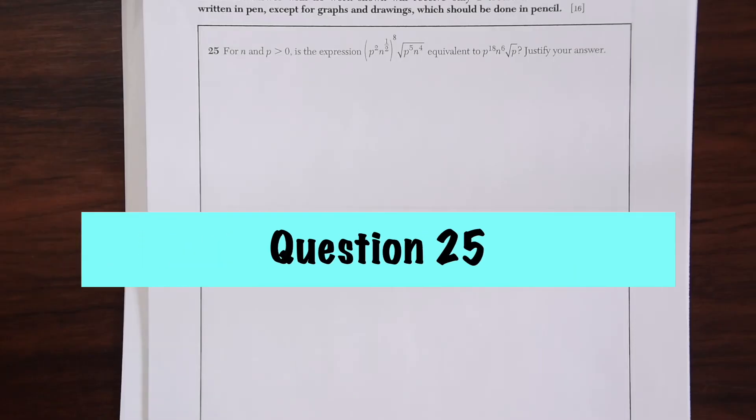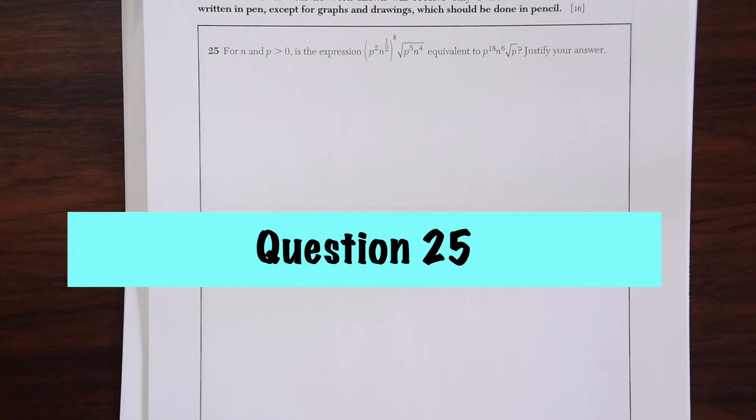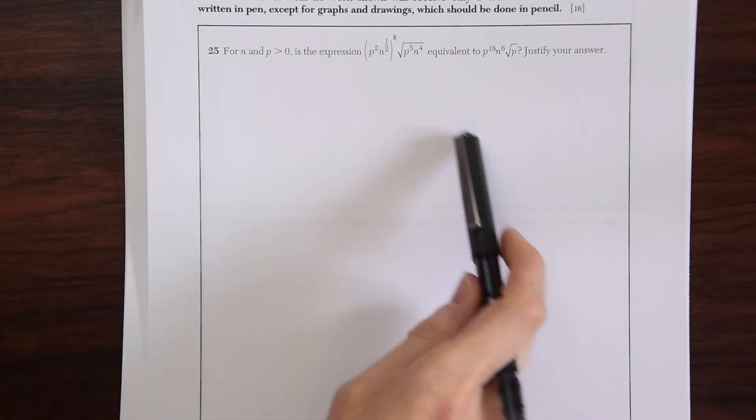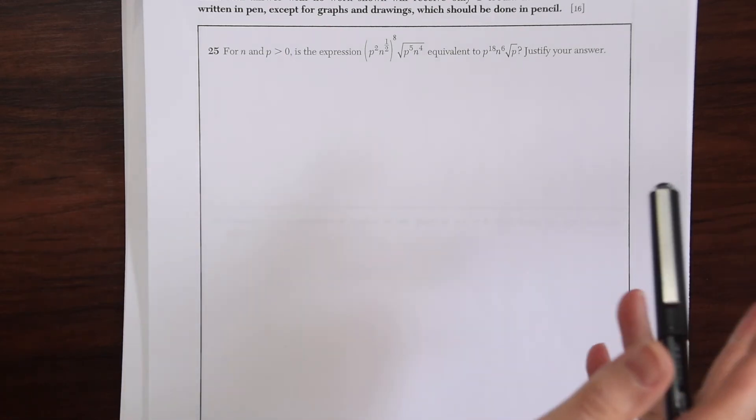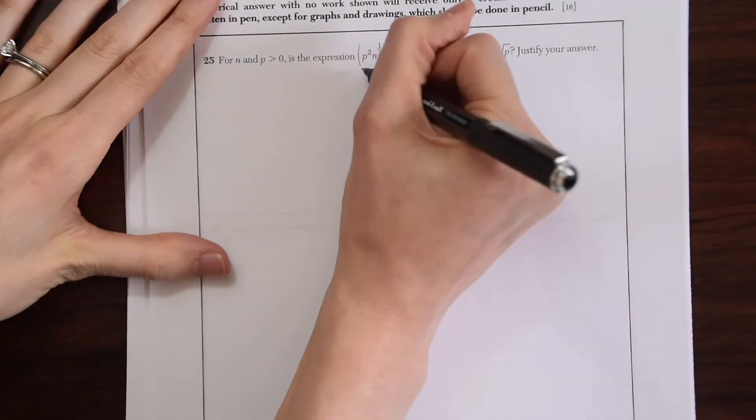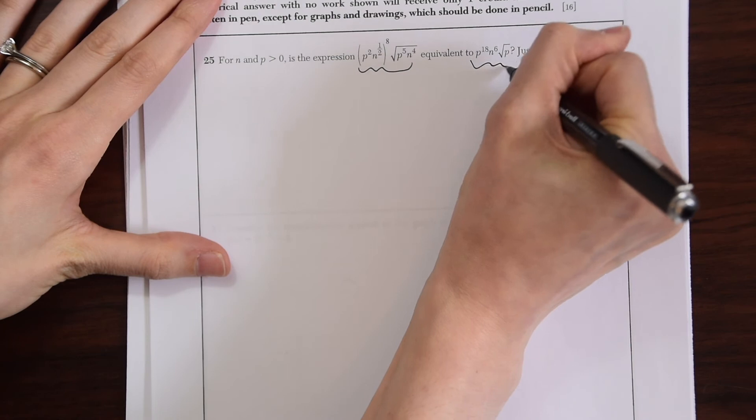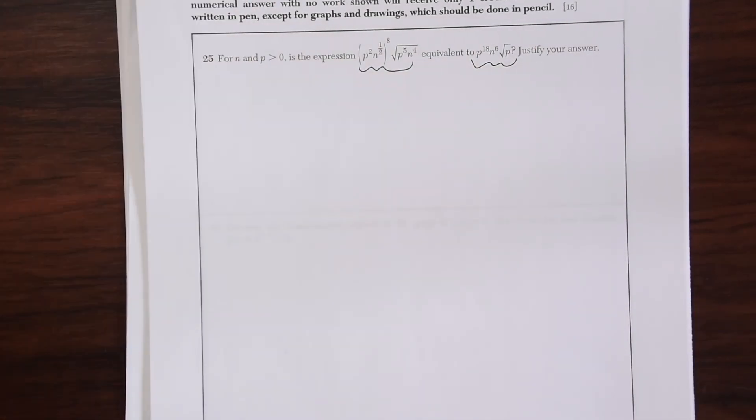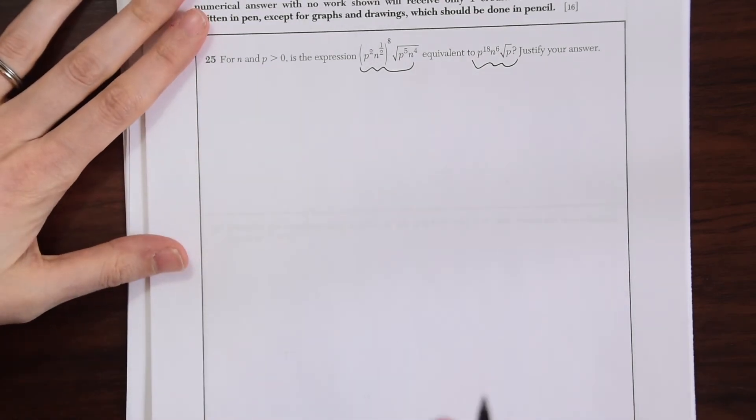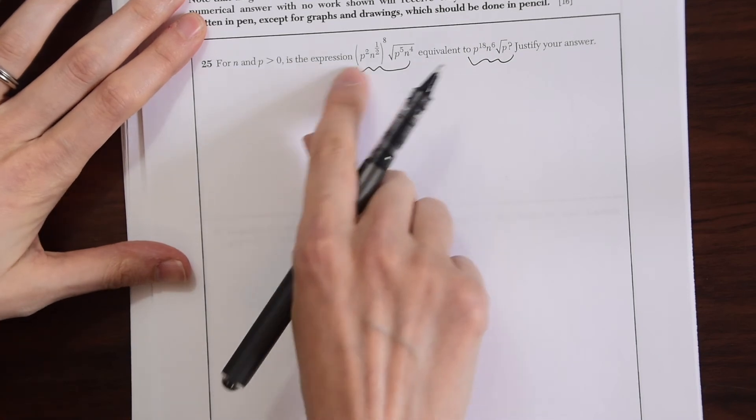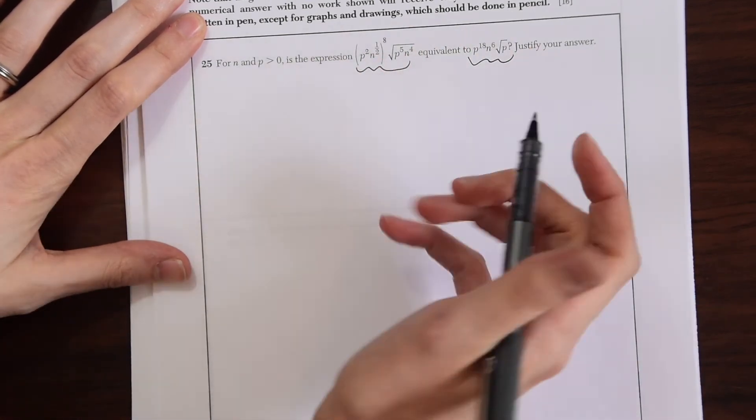Here's question 25 where n and p greater than zero is the expression and then we have this crazy looking expression equivalent to this crazy looking expression. Justify your answer, is this expression equal to this expression? That's what we want to know. Here we really want to know our rules for exponents and radicals. I'm just going to write out a simple rule that will be the basis for the rest to answer this question.